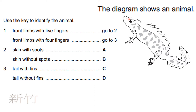The diagram shows an animal — use the key to identify it. Looking at the front limb, count the fingers: one, two, three, and four. That matches this option, so we strike off the other. Moving to the next trait: tail with fins or tail without fins? Looking at this, the fins are very clear. So the answer is going to be C.